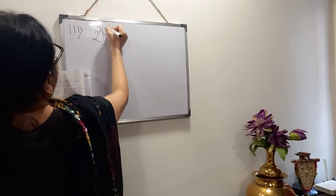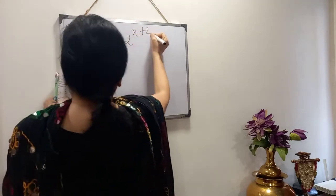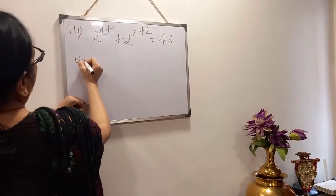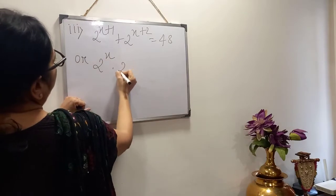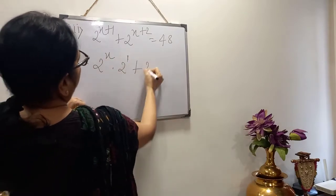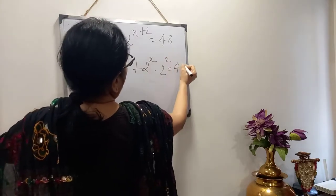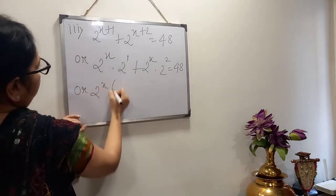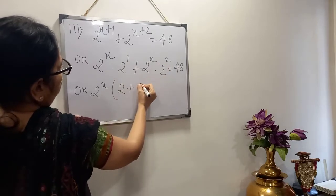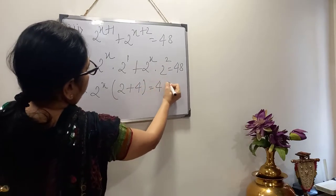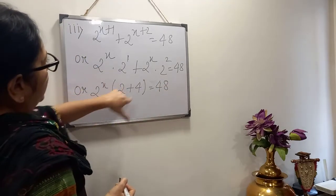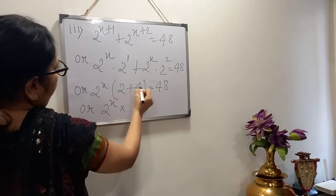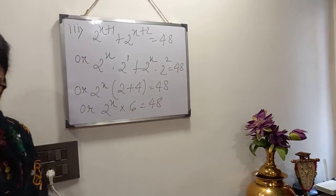Sum number 3, similar to number 2: 2 to the power x plus 1, plus 2 to the power x plus 2, equals 48. We break it again as 2 to the power x into 2, plus 2 to the power x into 2 squared. Taking 2 to the power x as common: inside the bracket 2 plus 2 squared, that is 2 plus 4 equals 6. So 2 to the power x times 6 equals 48.